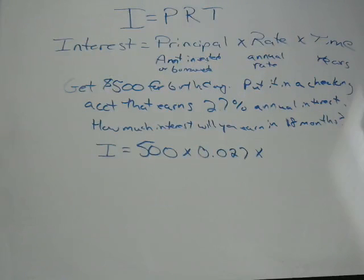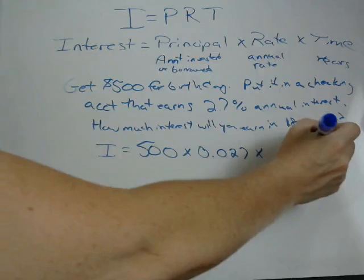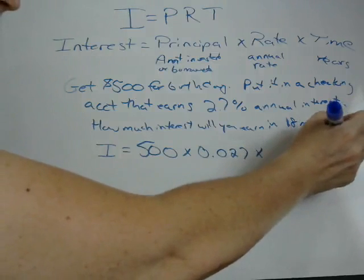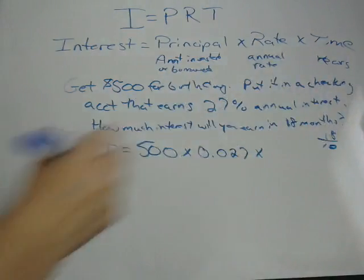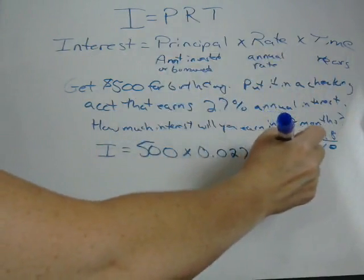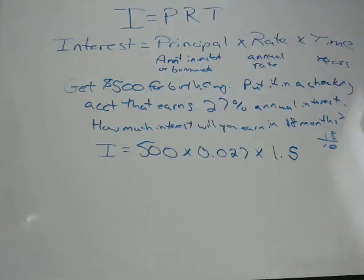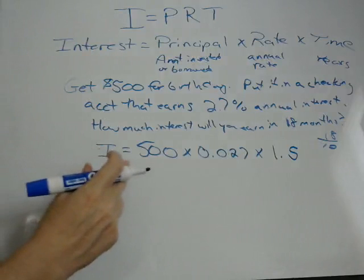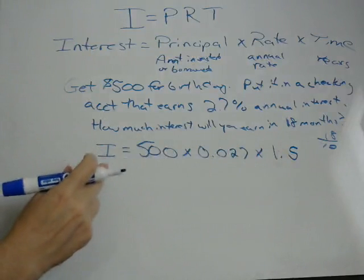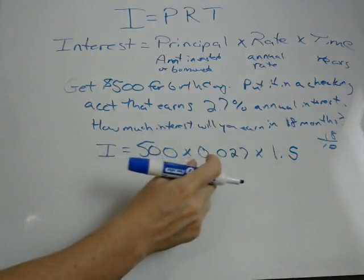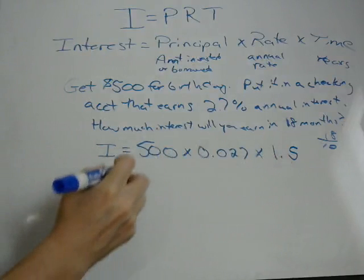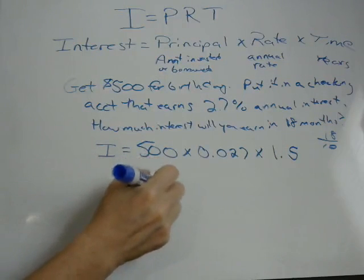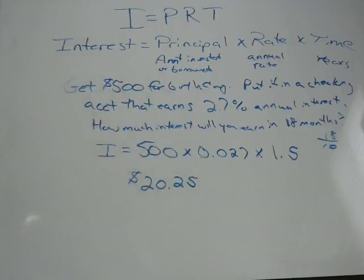They're giving us 18 months, not years. To convert months to years, you divide by 12 — since there are 12 months in a year. So 18 divided by 12 gives you 1.5. Now plug everything into your calculator: interest equals 500 times 0.027 times 1.5.